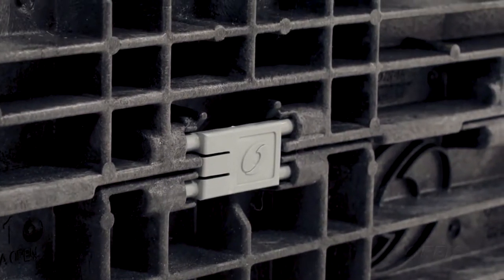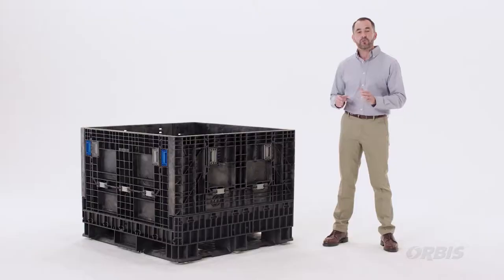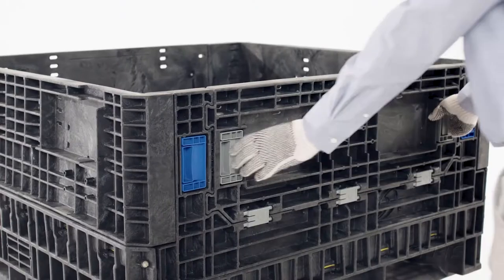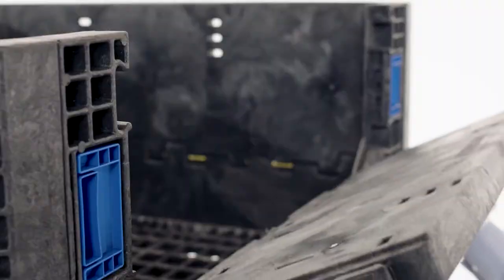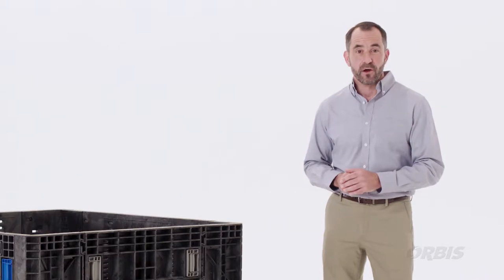The double access hinge allows the door to lay completely flat against the container, increasing ergonomics, optimizing workspace utilization, and improving safety while handling the bin. Repair is simple and will be covered in the latter part of this video.